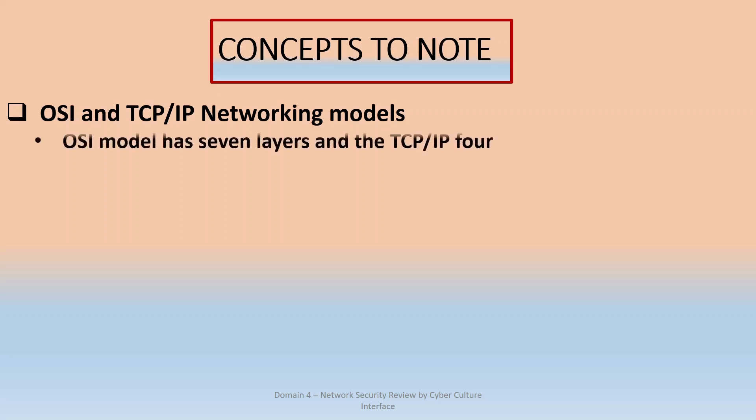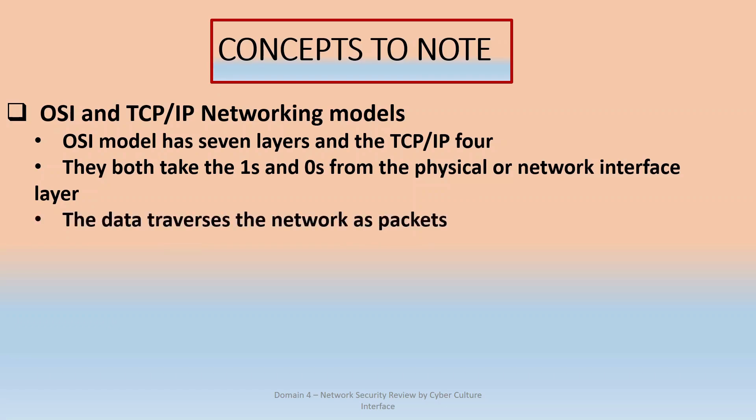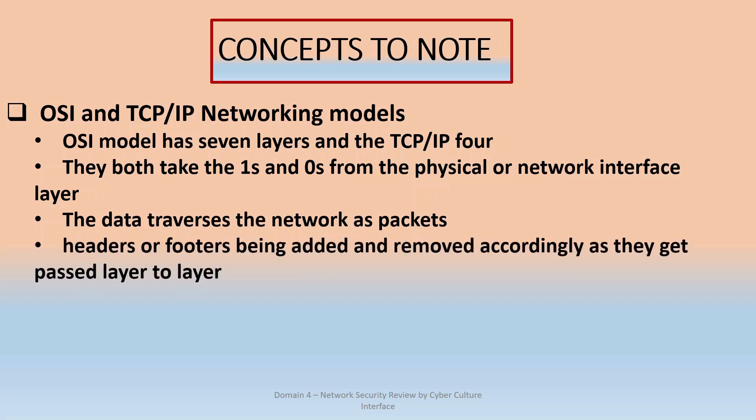Looking at OSI, the OSI model has seven layers while the TCP/IP model has four layers. But they both communicate with the physical network interface layer, where they take ones and zeros from physical devices like a cable. When data is moving within this network, within these layers, data moves as what we call packets. Packet is defined later towards the end of this video.